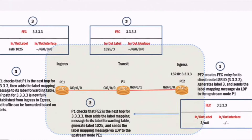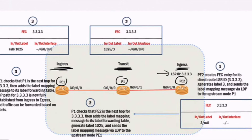To show how LDP can operate and establish an LSP path, we have three routers in the MPLS network: PE1, P1, and PE2. PE1 is the source of MPLS traffic, so it will be known as the ingress router. PE2 is the destination of traffic, so it will be known as the egress. P1 is known as the transit router because it connects PE1 to PE2. All routers in the MPLS network — P1 and PE2 — must have an LSP path to PE2's LSR ID.